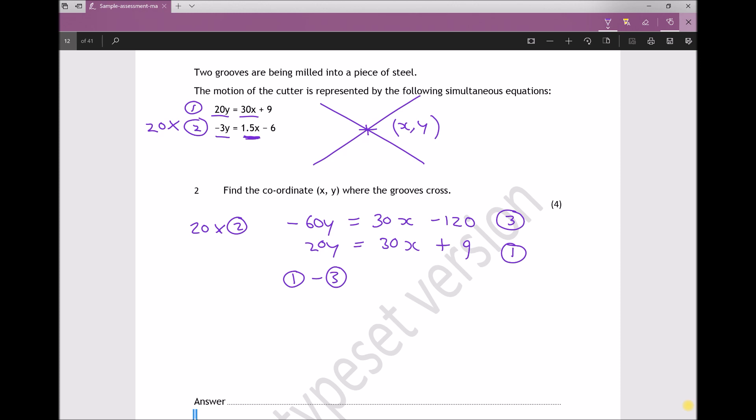If we look at the y terms first, we have 20y in equation 1 minus minus 60y from equation 2. Well, minus a minus is a plus, so what I actually have is 20y plus 60y, which is 80y. On the right-hand side, I have 30x minus 30x, which is just 0 - they cancel each other out. I have 9 from equation 1 minus minus 120 from equation 3. A minus and a minus is a plus, so 9 plus 120 is 129.